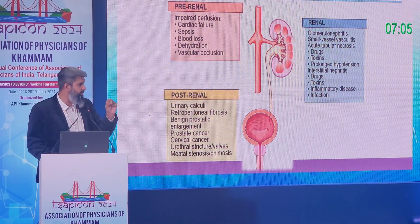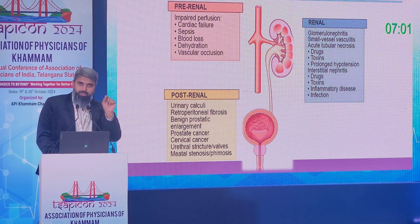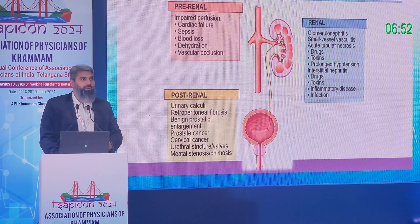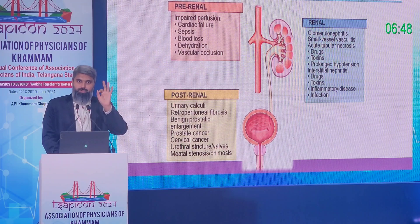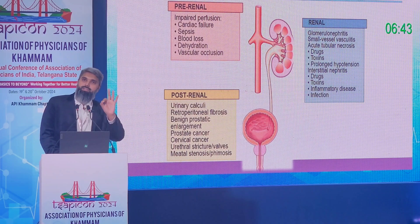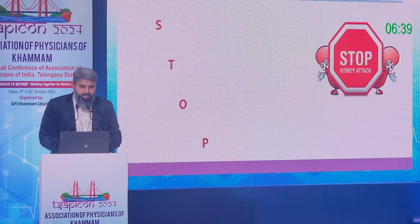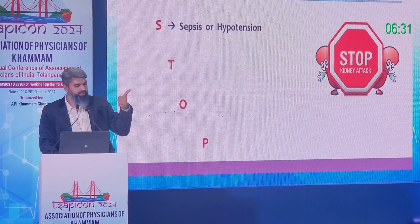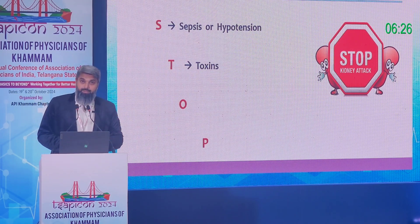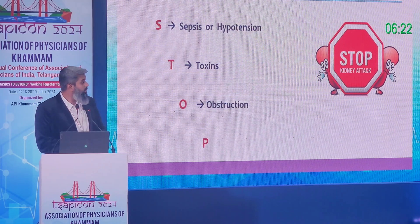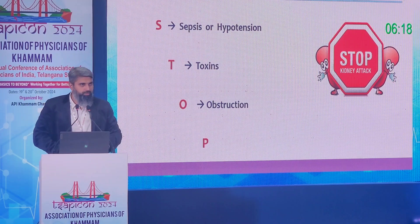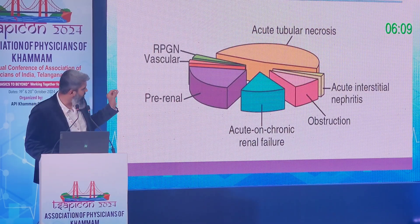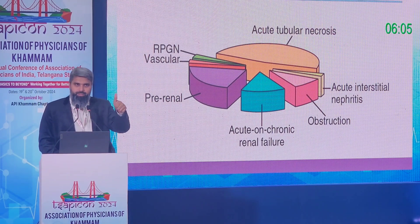The most important thing to rule out first when you see a high creatinine is obstruction. Do an ultrasound abdomen immediately — look for stones, hydronephrosis, or a large prostate causing obstruction. There are only 5–10% chances of AKI due to obstruction, but that is 100% curable and potentially reversible. The LAKI (London AKI Network) mnemonic covers: Sepsis, Hypotension, Toxins/NSAIDs/Lithium, drugs, Obstruction, and parenchymal disease.